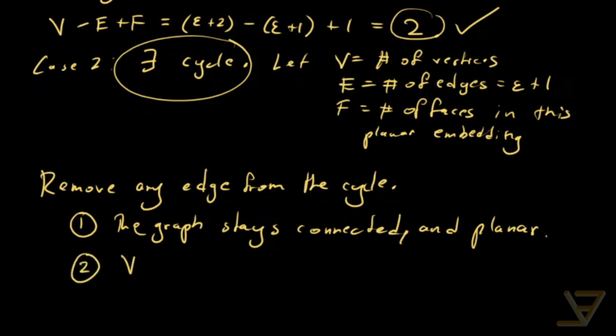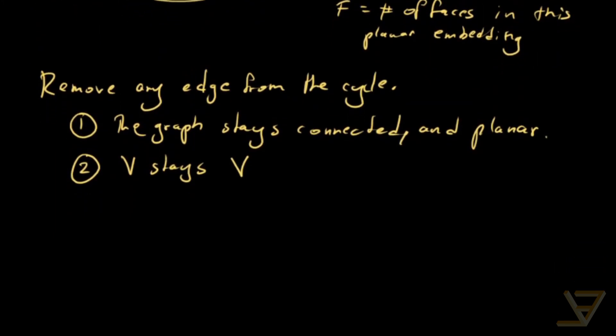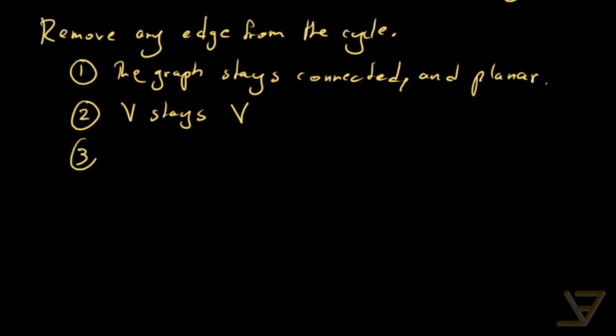Two, V stays the same, so the number of vertices stays the same. Three, the number of edges becomes E minus one. And four, this is the critical part, F also becomes F minus one. And I'll give you an example just to illustrate what I mean.